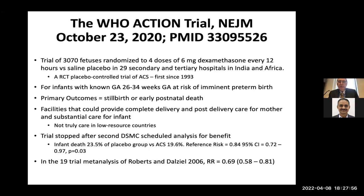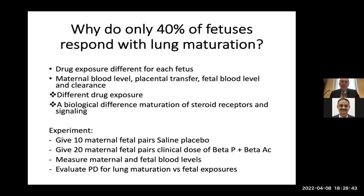The ACTION trial was an RCT — the first controlled trial of antenatal steroids since 1993 — for infants with known gestational age and risk of imminent death, in facilities that could provide complete delivery and postnatal care. The trial was stopped after the second DSMB review because there was a significant decrease in infant death. So I think in India presently, four doses of dexamethasone is the right way to treat women.